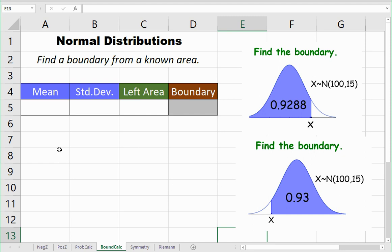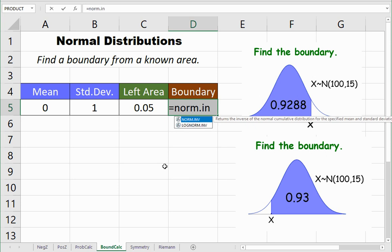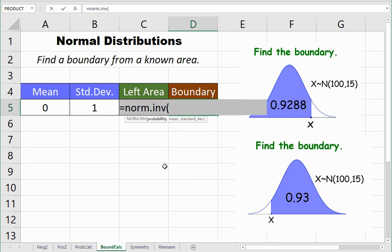We'll begin, as usual, by entering a mean and a standard deviation. We'll assume we're dealing with the standard normal distribution. Let's say we have a left area of 0.05. The boundary associated with that can be found by using norm.inv.